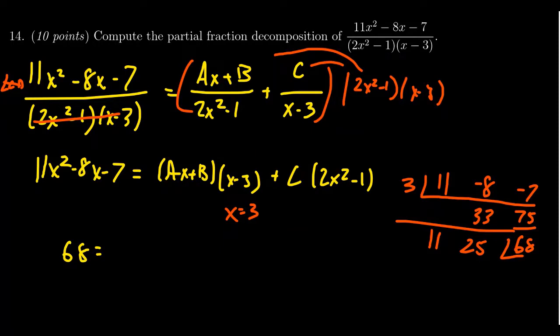On the right-hand side, when you plug in x equals 3 here, you get 0. The whole thing is annihilated. So we just have to plug in 3 here. This one's not as complicated, so I'm just going to plug and chug in the usual manner. So we get c times 2 times 3 squared minus 1. 3 squared is 9 times 2 is 18 minus 1 is 17.